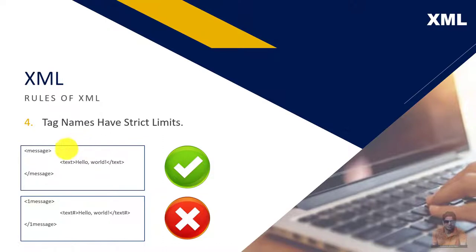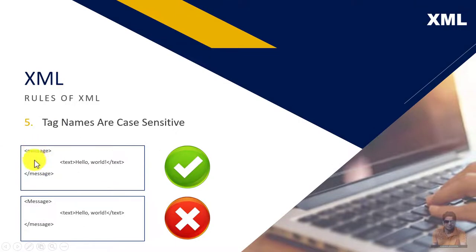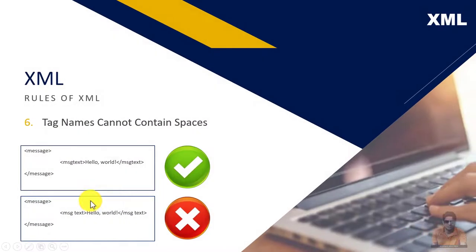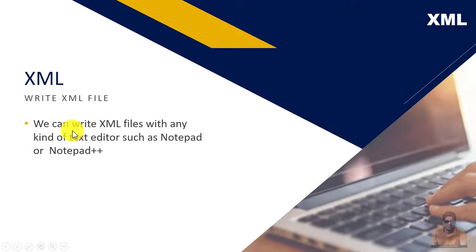Tag names have strict limits in XML. You cannot use any kind of special characters inside of the tags. For example, a tag named 'text#' is incorrect. Also, you cannot start a tag name with a number, tag names are case sensitive, and tag names cannot contain spaces. XML does not allow spaces inside of tag names. You can create your own tags inside XML, but you have to learn these rules before writing XML.